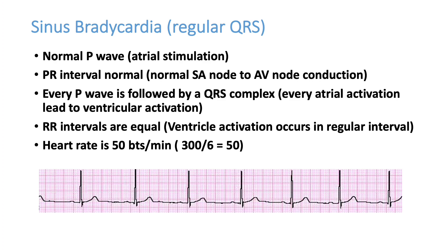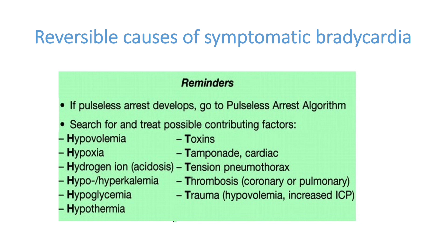There are reversible causes for symptomatic bradycardia — the 5H's and 5T's: hypovolemia, hypoxemia, hydrogen ion (acidosis), hypokalemia or hyperkalemia (hyperkalemia being more important), hypoglycemia, and hypothermia. The T's include toxins, cardiac tamponade (which can produce significant bradycardia), tension pneumothorax, coronary or pulmonary thrombosis, and inferior wall MI, which can produce severe bradycardia. Opioid poisoning is also an important toxicological cause of bradycardia.